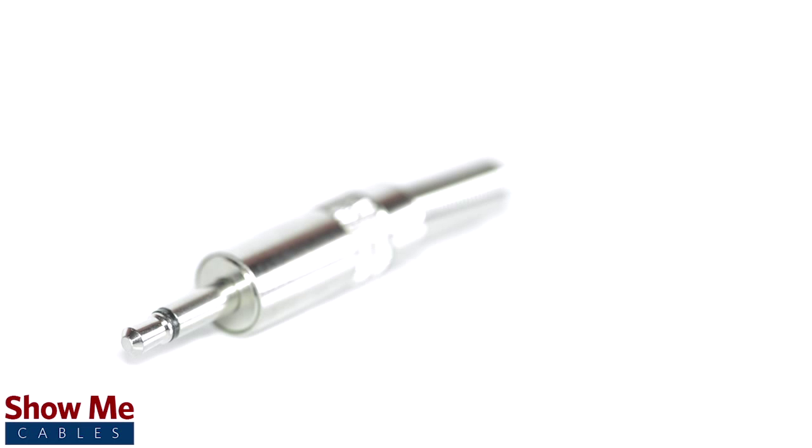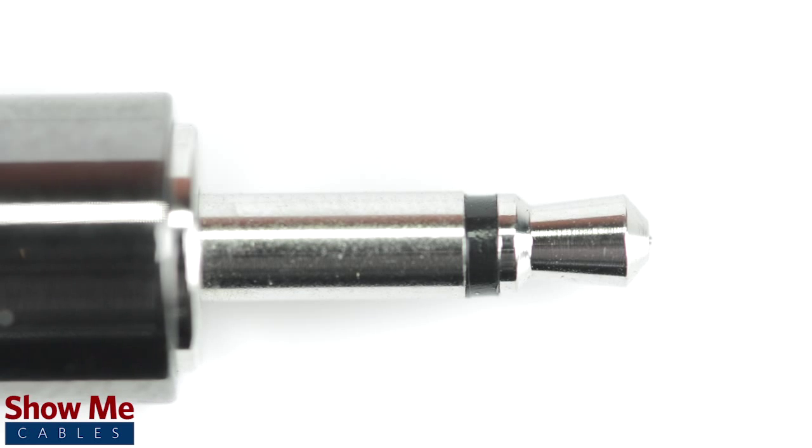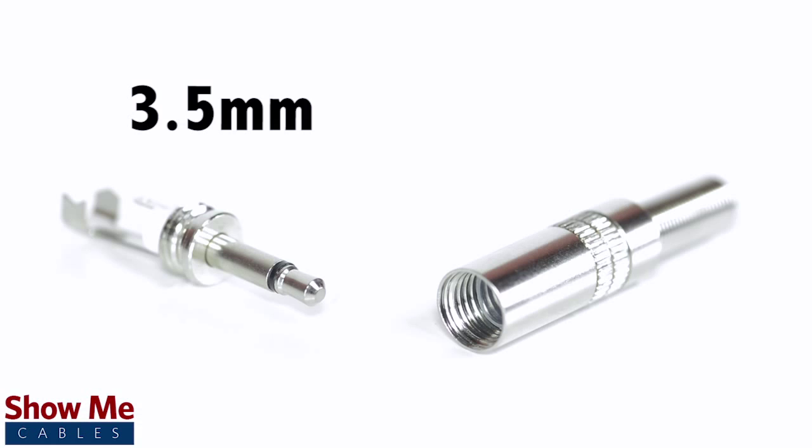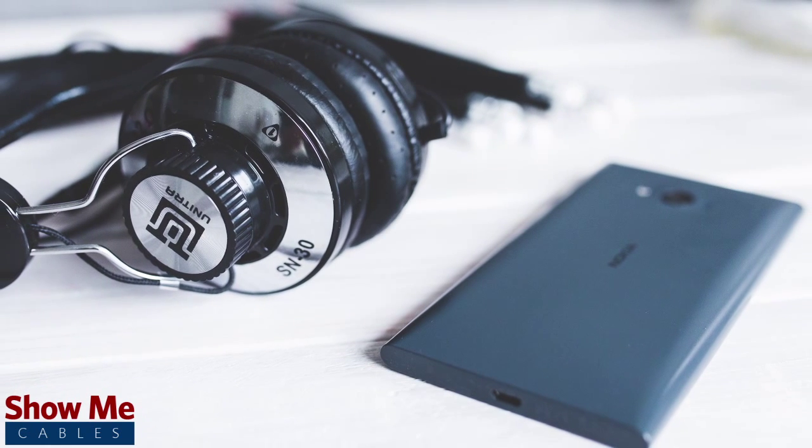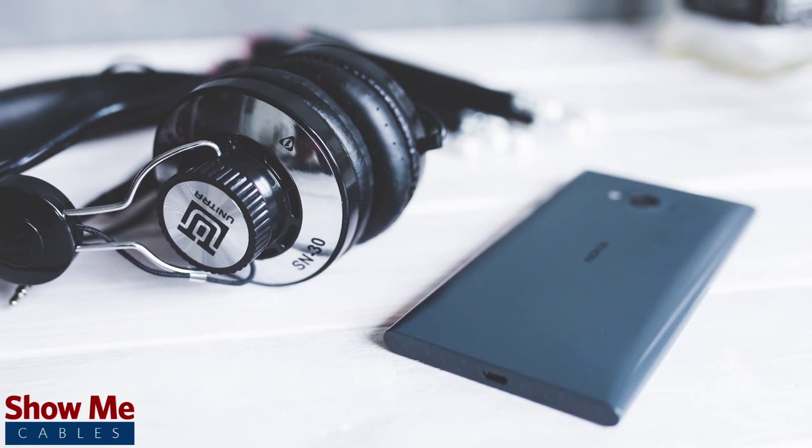A mono connector can be identified by the single black plastic band near the tip of the cable. 3.5 millimeter refers to the diameter of the plug. It is the most common size plug for small electronic devices such as headphones.